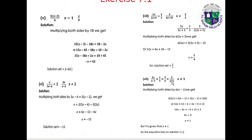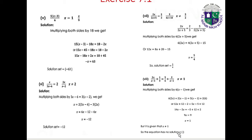Part 8: 2x/(x minus 1) plus 1/3 equals 5/6 plus 2/(x minus 1), where x is not equal to 1. Multiplying both sides by 6(x minus 1): 12x plus 2(x minus 1) equals 5(x minus 1) plus 12. This gives 14x minus 5x equals 5 plus 12 plus 2, so 9x equals 9, giving x equals 1. But since x is not equal to 1, the equation has no solution. Solution set: empty set.